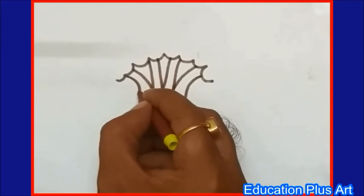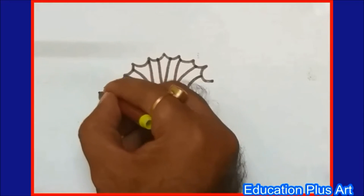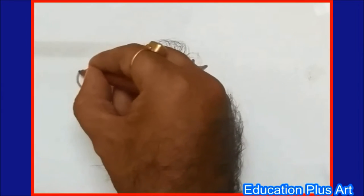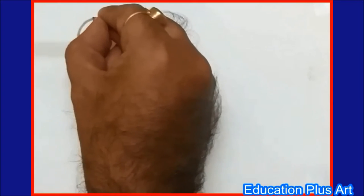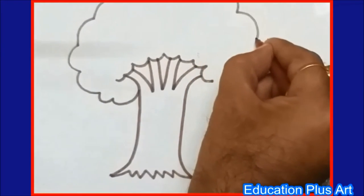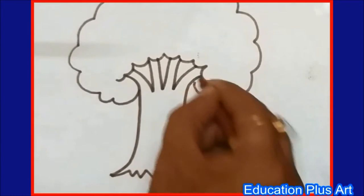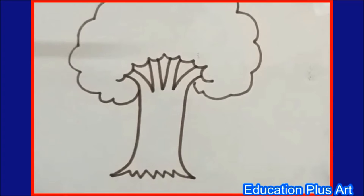Now I am going to make it a full curved one by using different kinds of curves, going towards upside. Here my tree is finished.